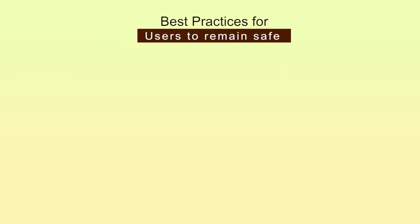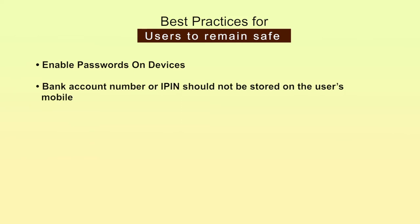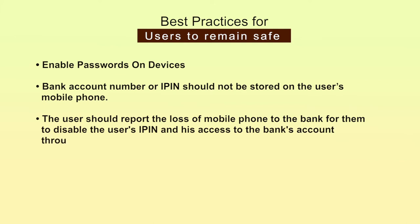Now I will suggest best practices for users to remain safe while using mobile banking. First, enable passwords on devices — strong passwords should be enabled on the user's phone, tablets and other mobile devices before mobile banking apps can be used, and additional layers of security inherently provided by these devices should be used. Second, bank account numbers or IPIN should not be stored on the user's mobile phone. Third, the user should report the loss of a mobile phone to the bank for them to disable the user's IPIN and their access to the bank account through the mobile banking app.